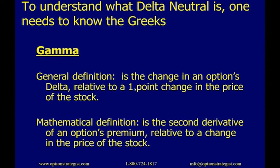Gamma's general definition: gamma is the change in an option's delta — not the price of the option, but a change in the delta — relative to a one-point change in the price of the stock. The mathematical definition is that gamma is the second derivative of an option's premium relative to a change in the price of the stock. The Greeks apply to stock options, index options, and options on futures. I'm going to be talking about stock options here, but the concept would be the same for any other type.